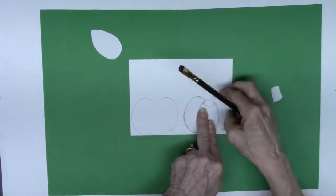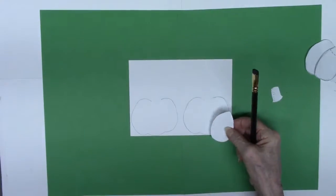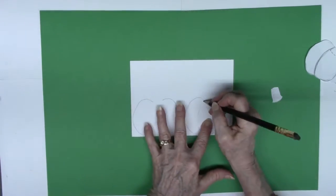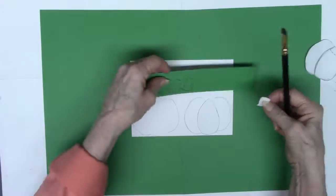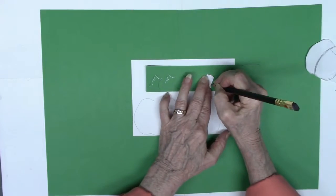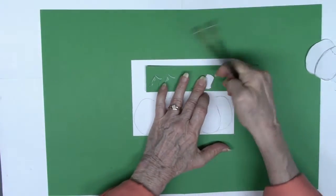Now I'm tracing around these pumpkins, two white ones with the template, and I'm also going around that center section to show the dimension of the pumpkin and going around the stems. I'll cut all these out.